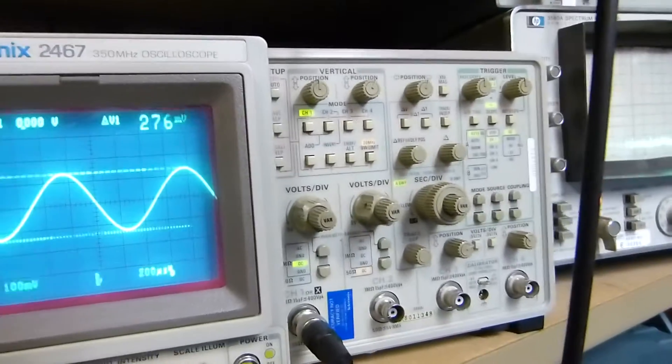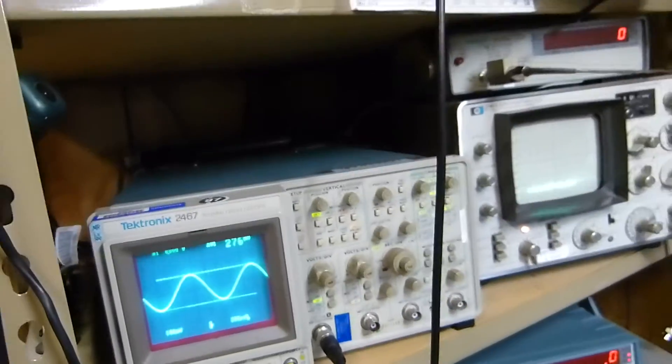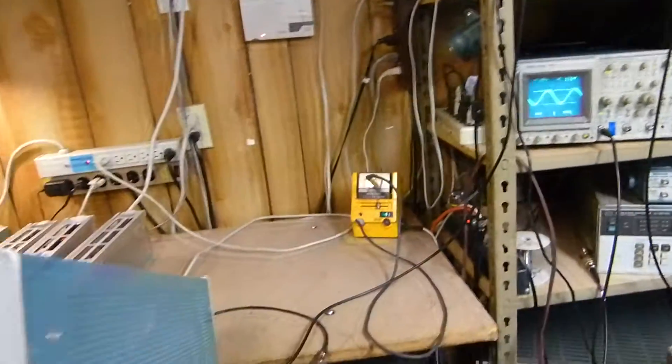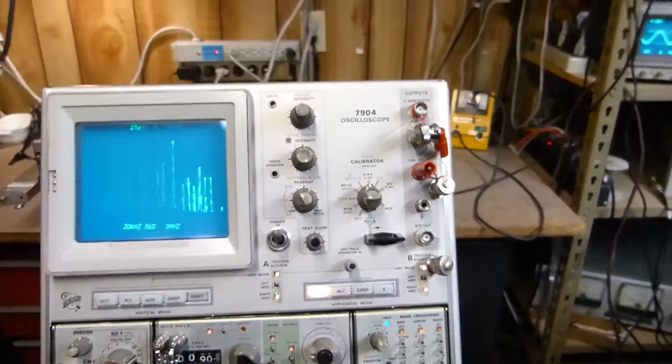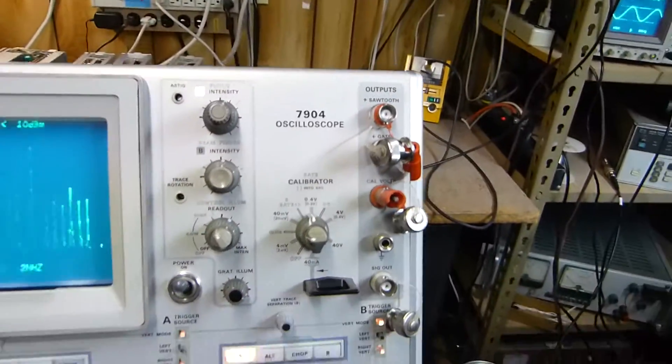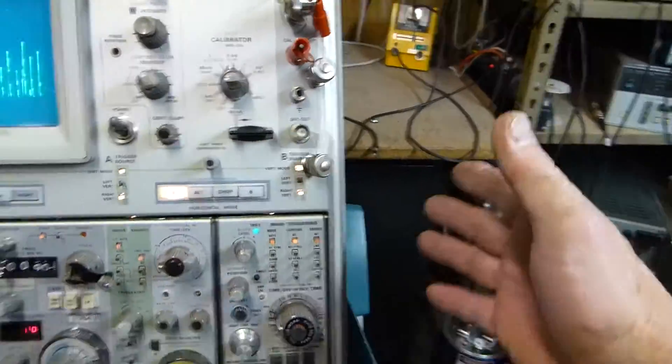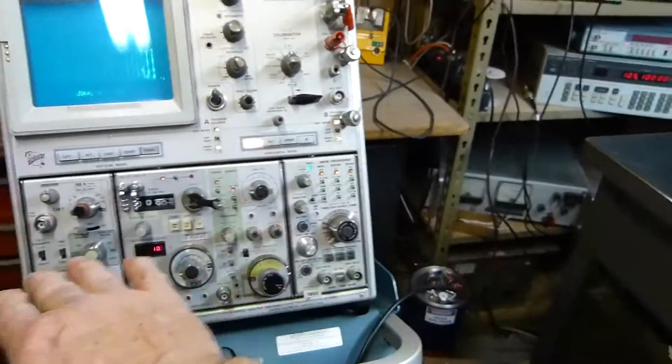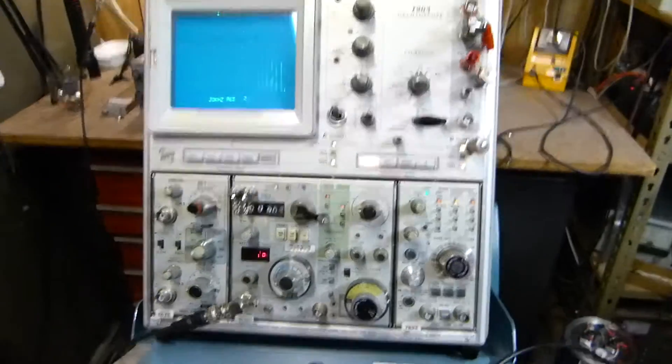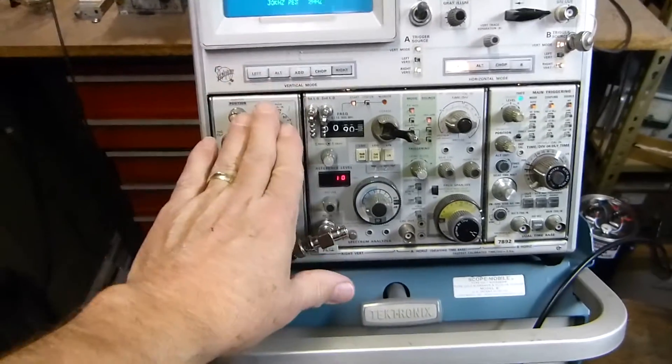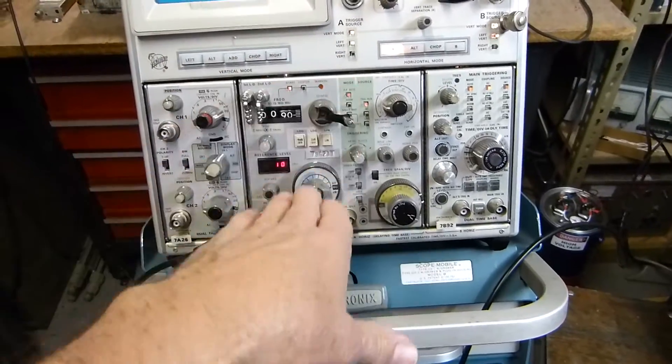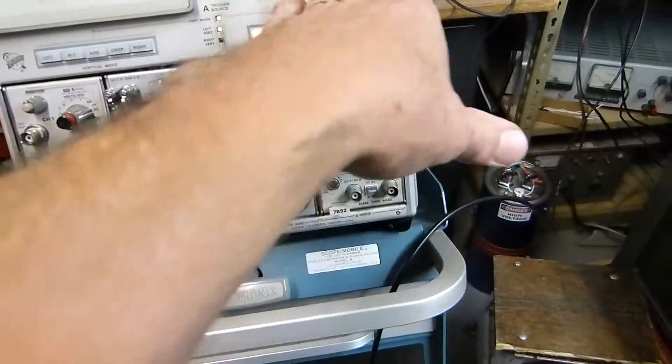Another gorgeous instrument is this 7904 oscilloscope. This is a mainframe where you can buy all of these plug-in modules for it. The way this thing is laid out is this is a vertical channel, this is a vertical channel, this is a horizontal channel, and a horizontal channel. So it's got two vertical channels and two horizontal channels.